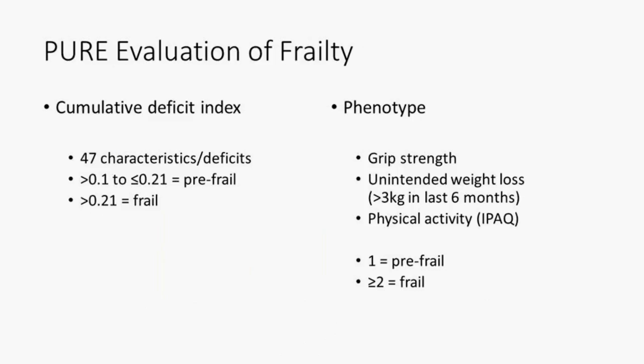Following that initial research on grip strength, we measured frailty in the PURE cohort in two ways. One used a cumulative deficit index with 47 characteristics measured in PURE, applying the previously described thresholds for pre-frail and frail. We also used a phenotypic approach measuring only grip strength, physical activity via the International Physical Activity Questionnaire, and unintentional weight loss of more than three kilograms in six months — considering someone frail with two or more of these three characteristics, and pre-frail with one.